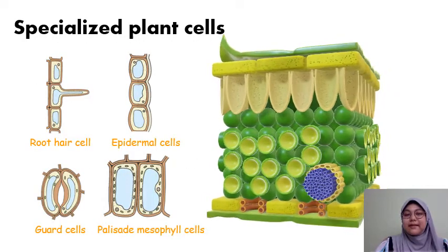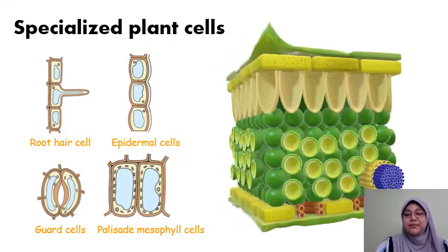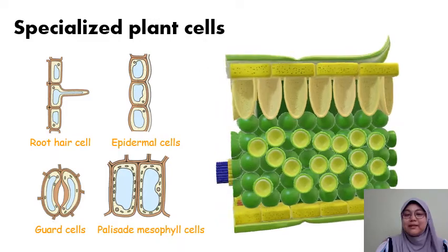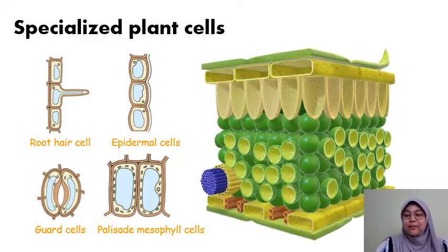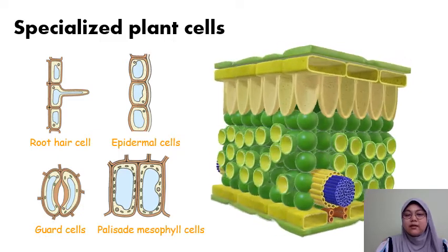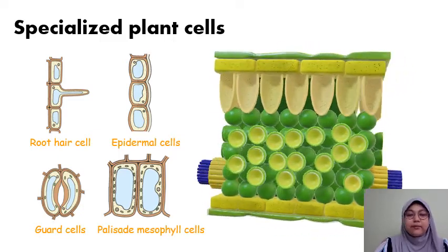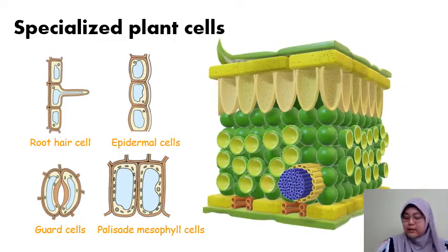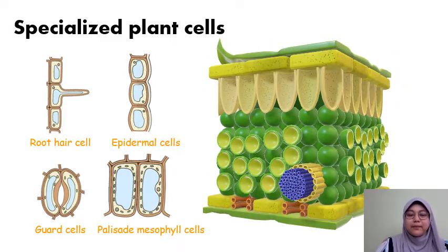The typical plant cell will then be specialized into certain specialized plant cells. I have a couple of examples here. We have the root hair cell, and epidermal cells, guard cells where the stomata is, and also the palisade mesophyll cells. This is a cross-section of a leaf where you can see the different specialized plant cells.